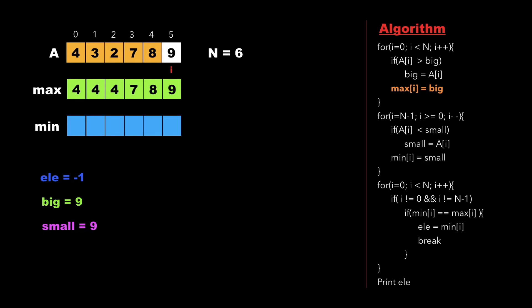So the max array is [4, 4, 4, 7, 8, 9]. Then we run the second for loop from i=n-1 down to i=0. At each step we check if a[i] is less than small, update small if so, and insert small into min[i]. So min[5]=9, min[4]=8, min[3]=7, min[2]=2, min[1]=2, and min[0]=2.